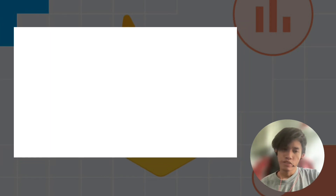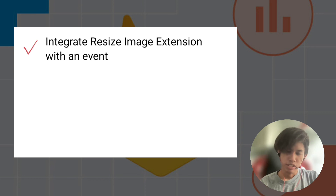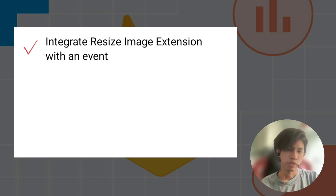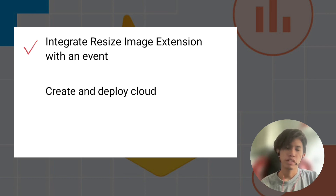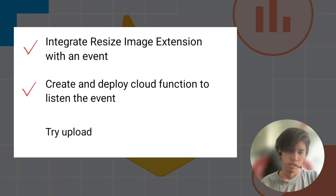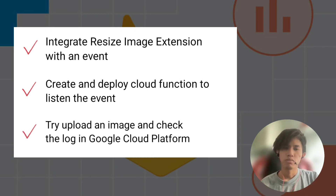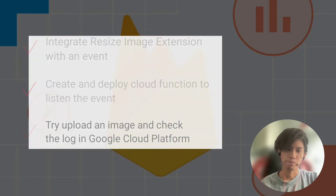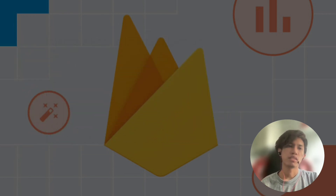In summary, we have successfully integrated the Firebase extension Resize Image and set up the event for when the resize is completed. We then created and deployed a Cloud Function that logs something, and the log appears on Google Cloud Platform to confirm the function was really executed. That's all — thank you, and I'll see you in the next one.